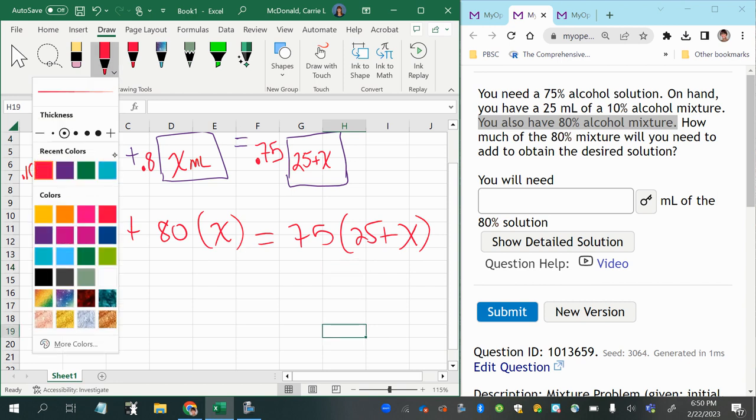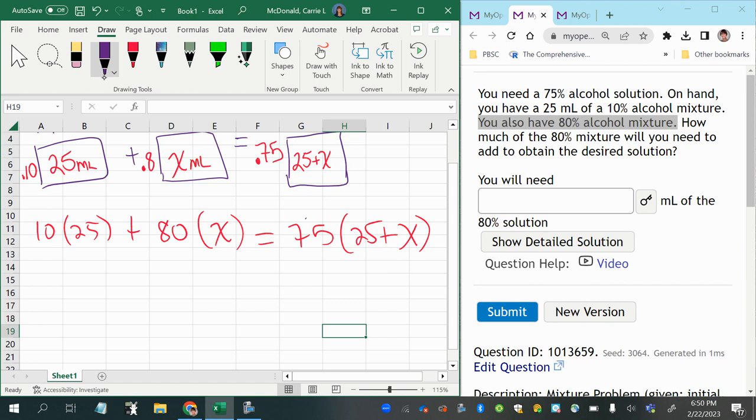Now we're going to go distribute. We're going to simplify the right-hand side so that we get 75 times 25 and then 75x. So all I'm doing is the distribution of multiplication, 75 times 25 and then 75 times positive x.